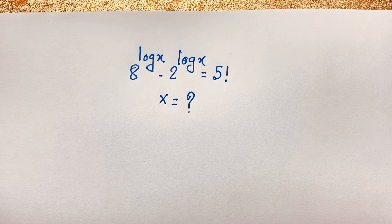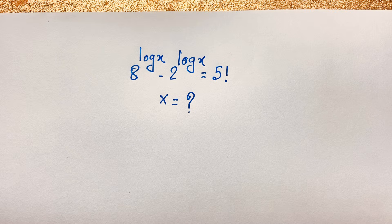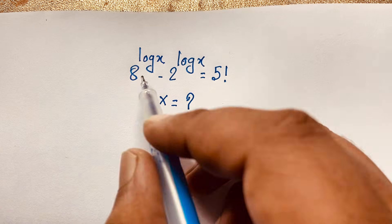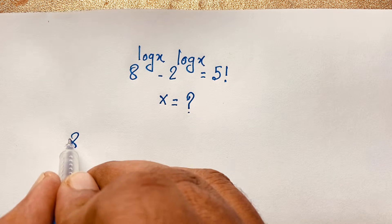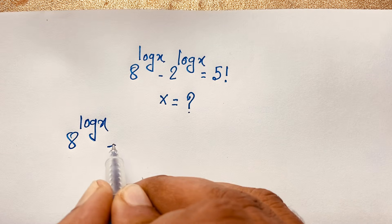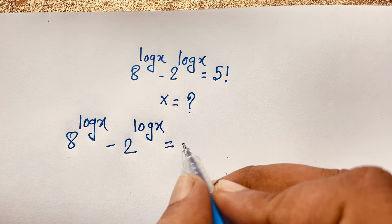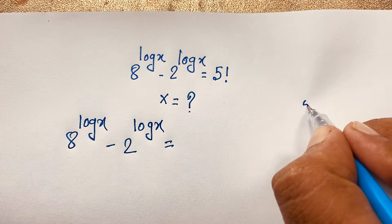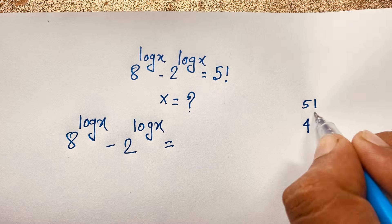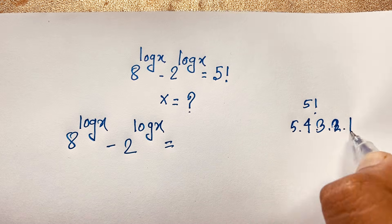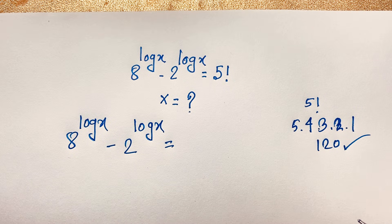Hello everyone. In this video we have solved a nice master lumped question: a to the power log x minus 2 to the power log x is equal to 5 factorial — what is x? So 5 factorial is a nice factorial question. Our question is a to the power log x minus 2 to the power log x is equal to 5 factorial. 5 factorial is 5 times 4 times 3 times 2 times 1, which equals 120.